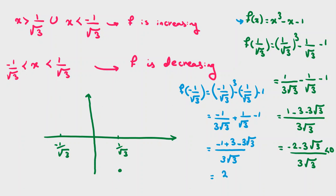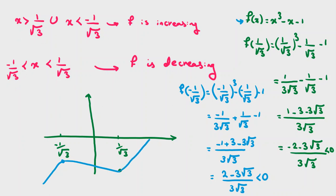Since 2 is less than 3 root 3, f of negative 1 over root 3 is a positive number. Now, looking at the diagram: f is increasing for x less than negative 1 over root 3, then decreasing between the two critical points, then increasing again for x greater than 1 over root 3. Both critical values — f of 1 over root 3 is negative and f of negative 1 over root 3 is positive — so by the shape of the graph we conclude there is exactly one real root, and that root is greater than 1 over root 3.